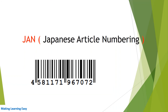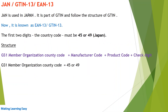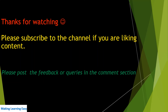Now let's see JAN — Japanese Article Number. I have attached a screenshot of it; you can see it is 13 digits. JAN is used in Japan, it is part of GTIN and follows the structure of GTIN-13. The first two digits are the country code and must be 45 or 49. The structure follows the same as GTIN-13: GS1 member country code, manufacturer code, product code, and check digit. For Japan, the member organization country code is 45 or 49. That's all for this session — thanks for watching, see you in the next video.